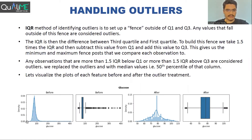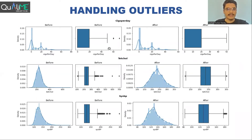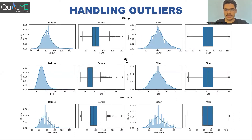This is the comparison: the distribution of the glucose column before outlier treatment and after. Earlier there were many outliers, but after treatment only a few remain and the distribution has become very close to normal — the mean and median are now lying on the same line at the center. Similarly, for cigarettes per day, total cholesterol, systolic BP, diastolic BP, BMI, and heart rate, all have become normally distributed after outlier treatment.